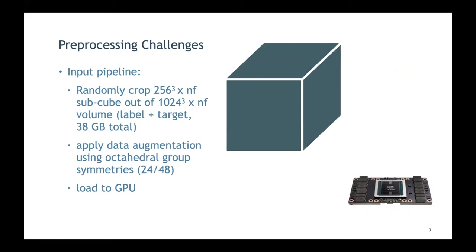They want to crop out sub-volumes of 256³ to feed to the neural network, since the whole 38GB doesn't fit. They also hope to get better convergence through this sampling and have the network learn features like translational invariance.